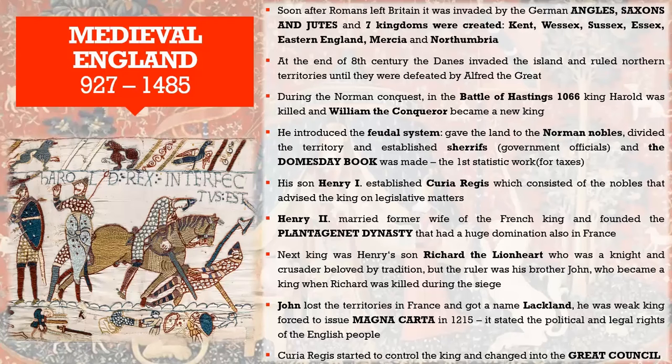The actual ruler was Richard's brother John, who became king when Richard was killed during a siege. John had always desired the title, but he was not a good ruler. He didn't have the qualities for strong leadership — in fact, he lost the territories in France that his predecessors had acquired, and for that he received the name Lackland.